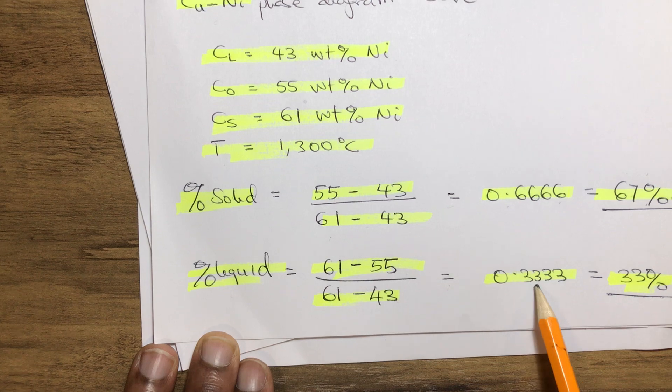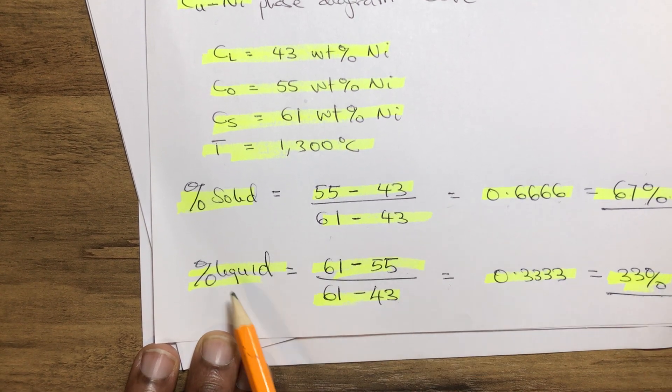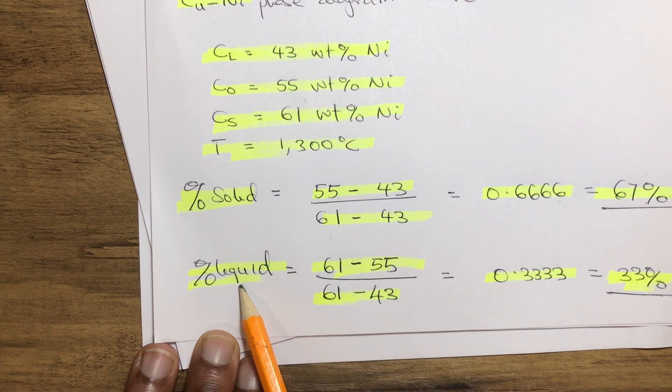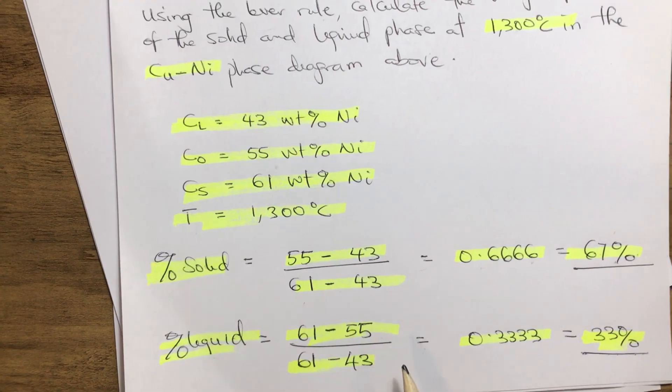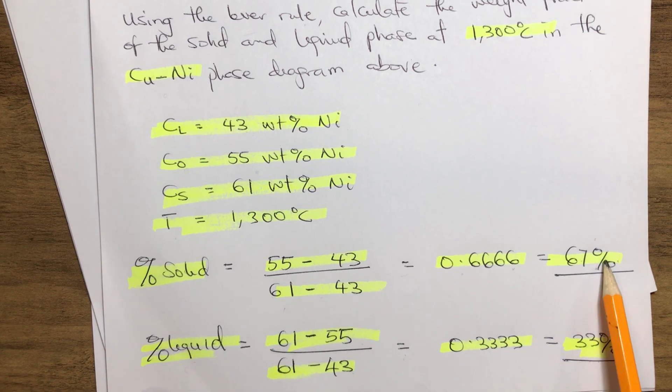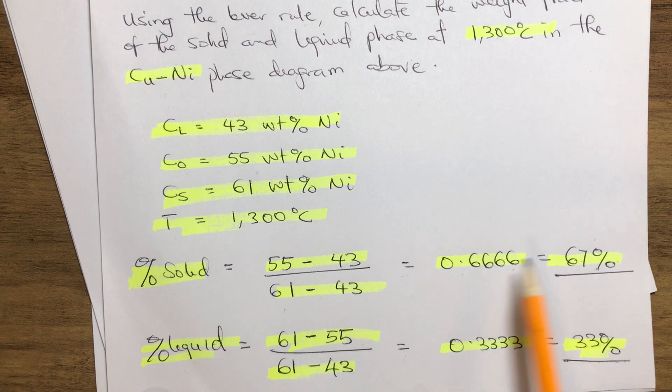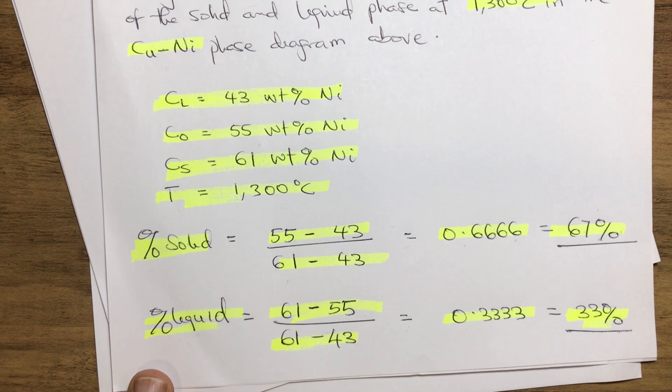For the liquid phase: (61 - 55) / (61 - 43) = 0.3333, which gives us 33 percent of the liquid phase. Therefore we have 67 percent on the solid phase and 33 percent on the liquid phase. Thank you very much.